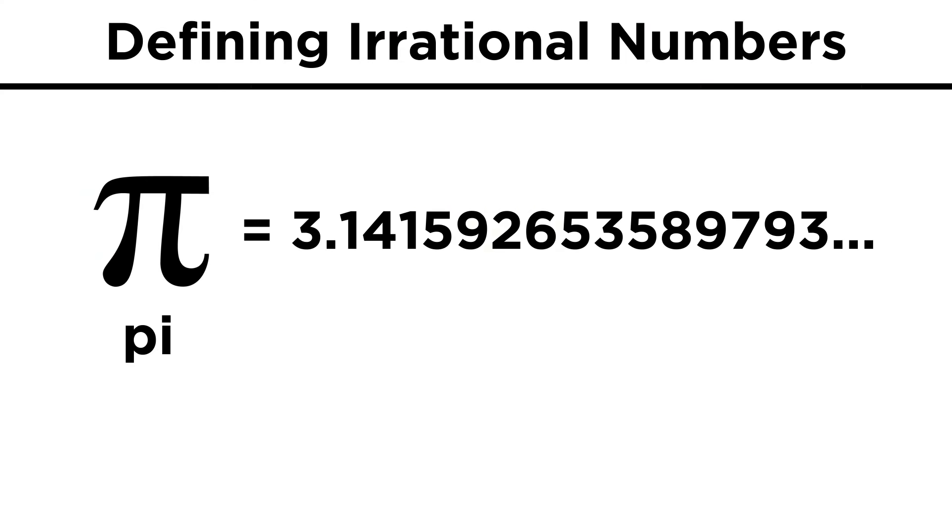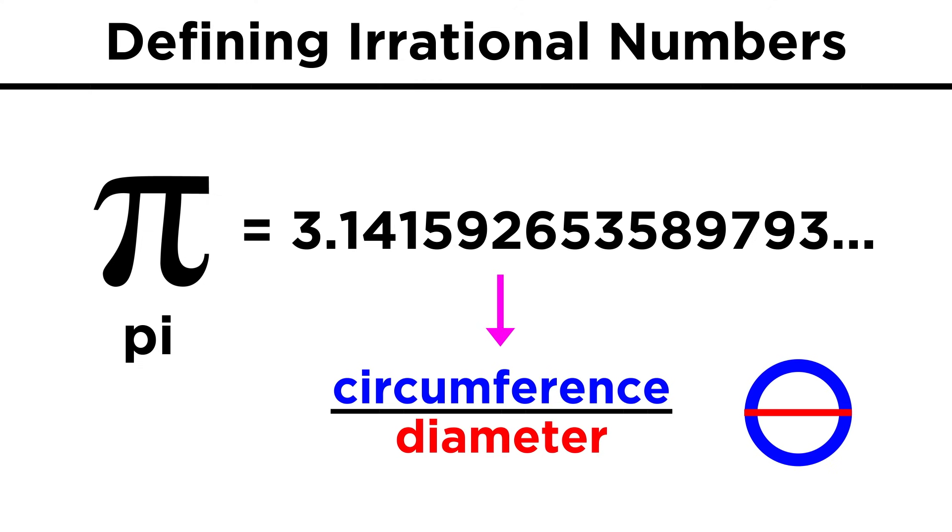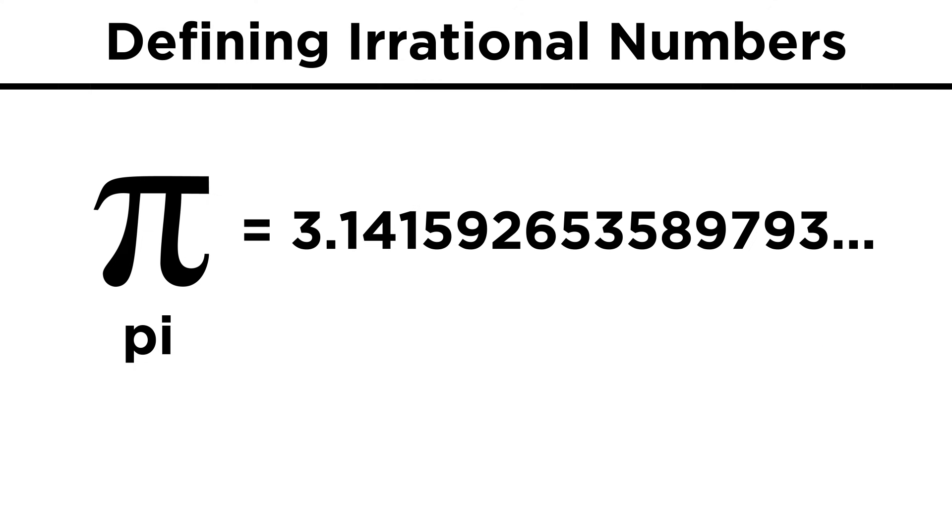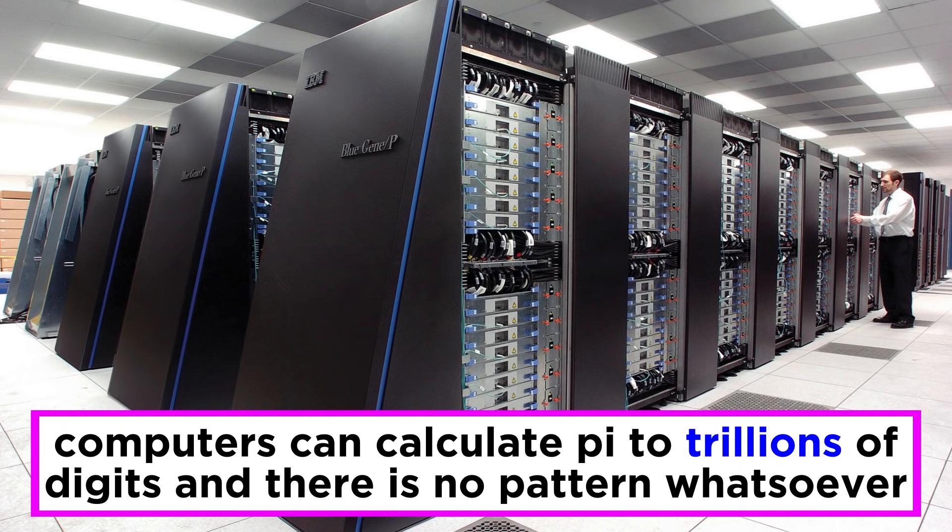Other irrational numbers include pi, which is the ratio of the circumference of a circle to its diameter. We all probably know the first few digits of pi, which are 3.14159 yada yada yada. Again, this number never ends with no pattern whatsoever in the digits, and it's not for lack of trying, mathematicians have checked. With computers, we can calculate pi out to literally trillions of decimal places, and the numbers are random throughout.